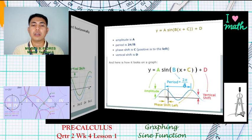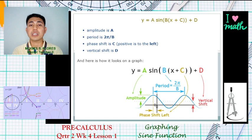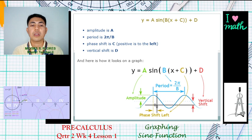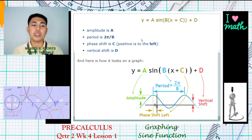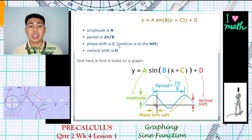Now we have the standard form of the sine function: y = a·sin(bx + c) + d, where a stands for the amplitude, 2π over b gives the period, c is the phase shift, and d refers to the vertical shift.